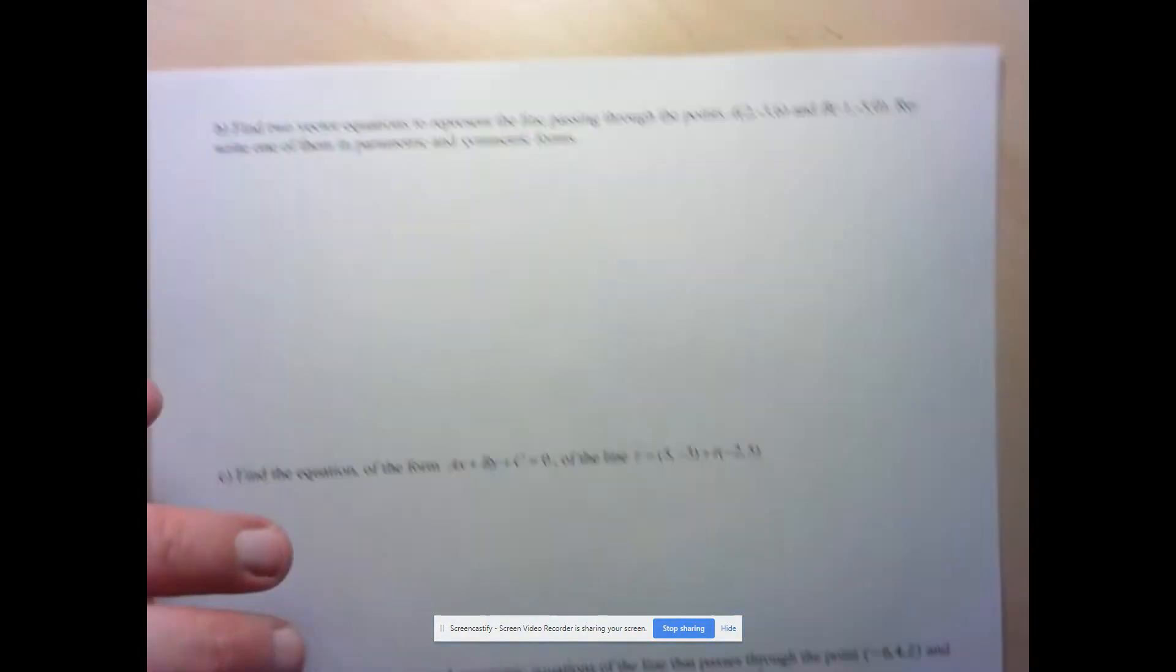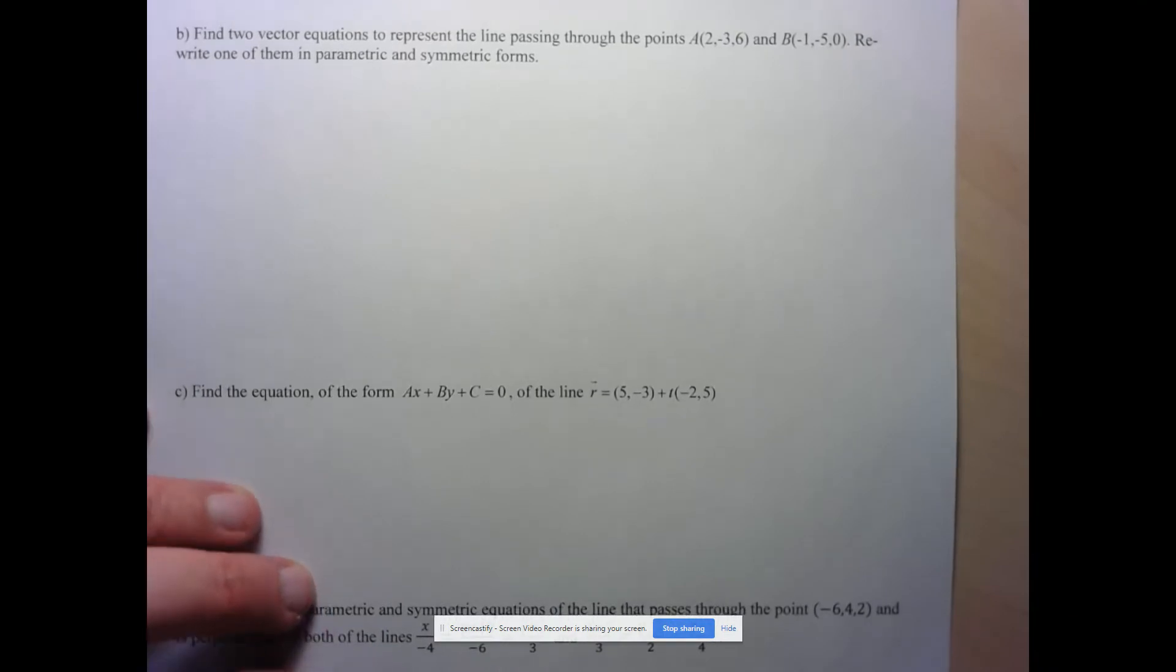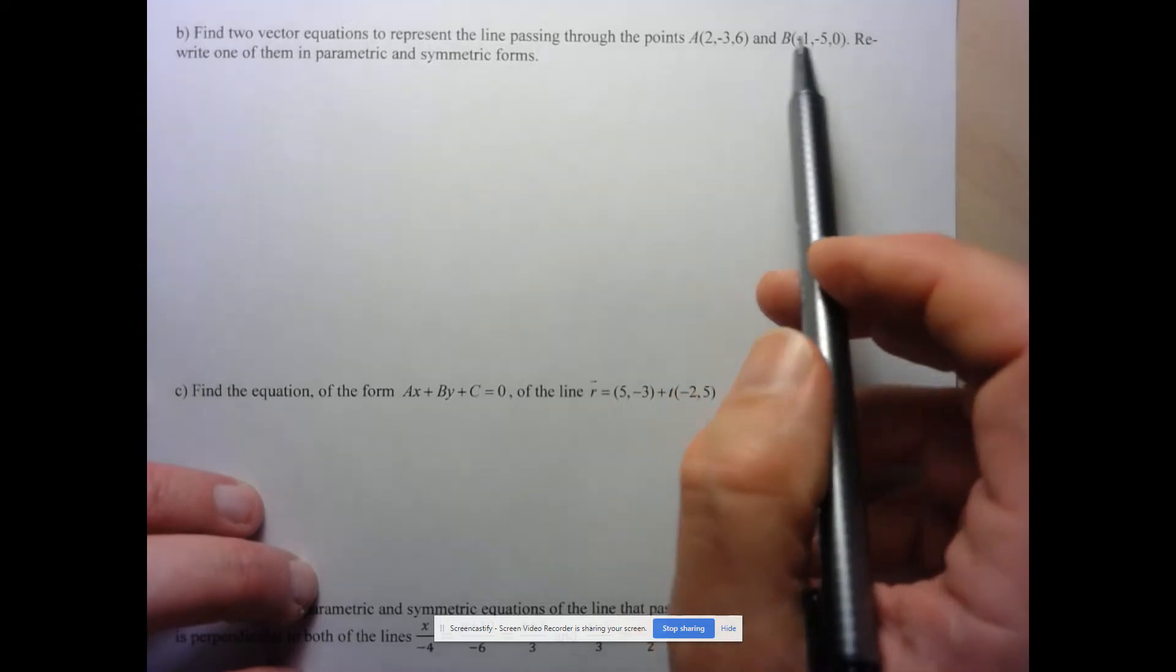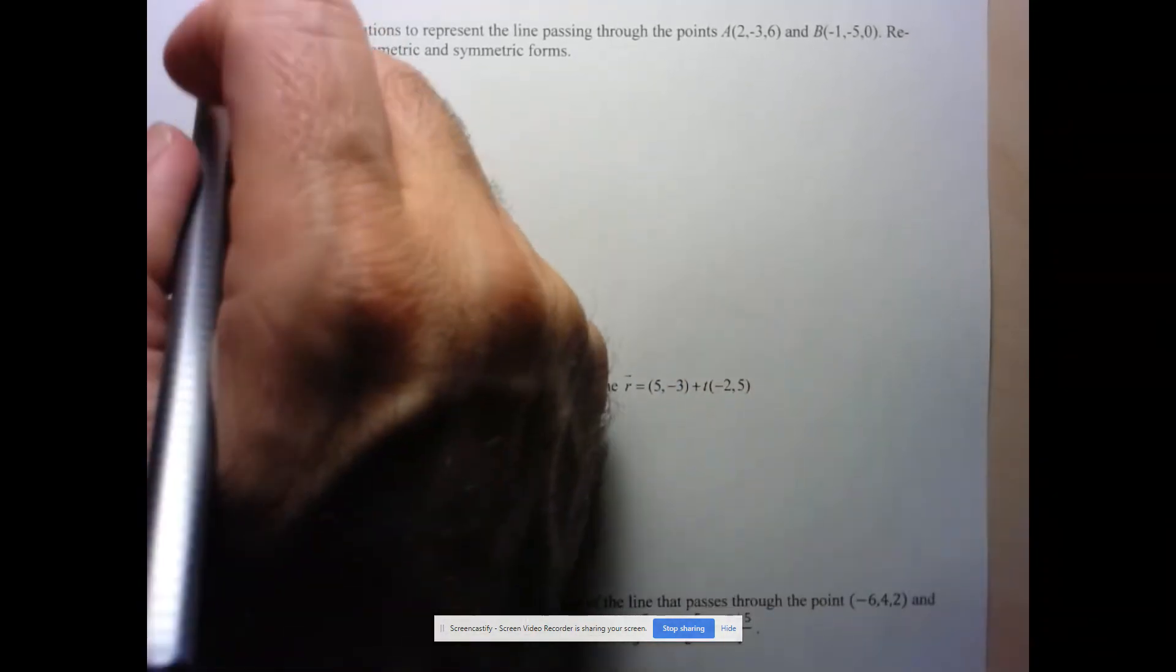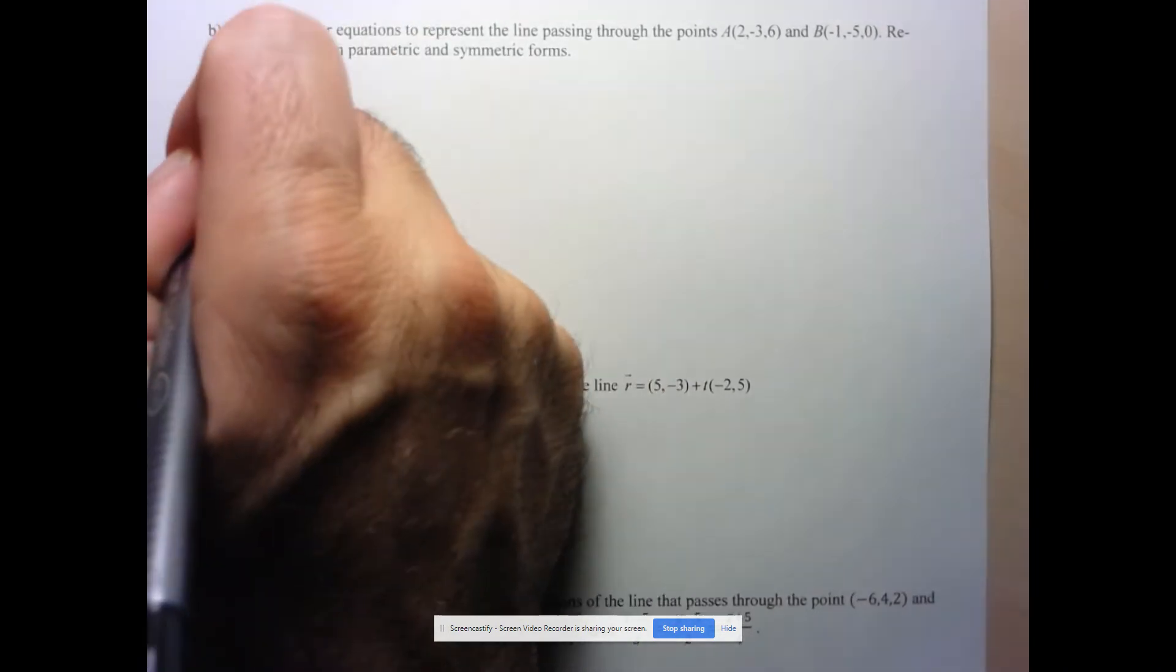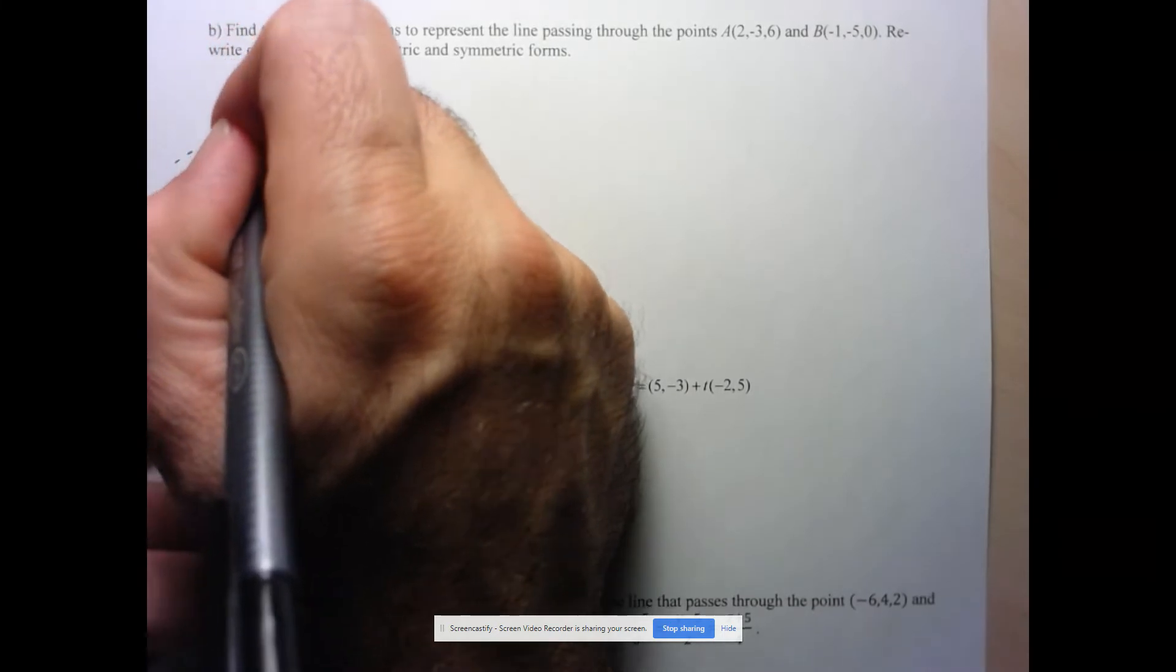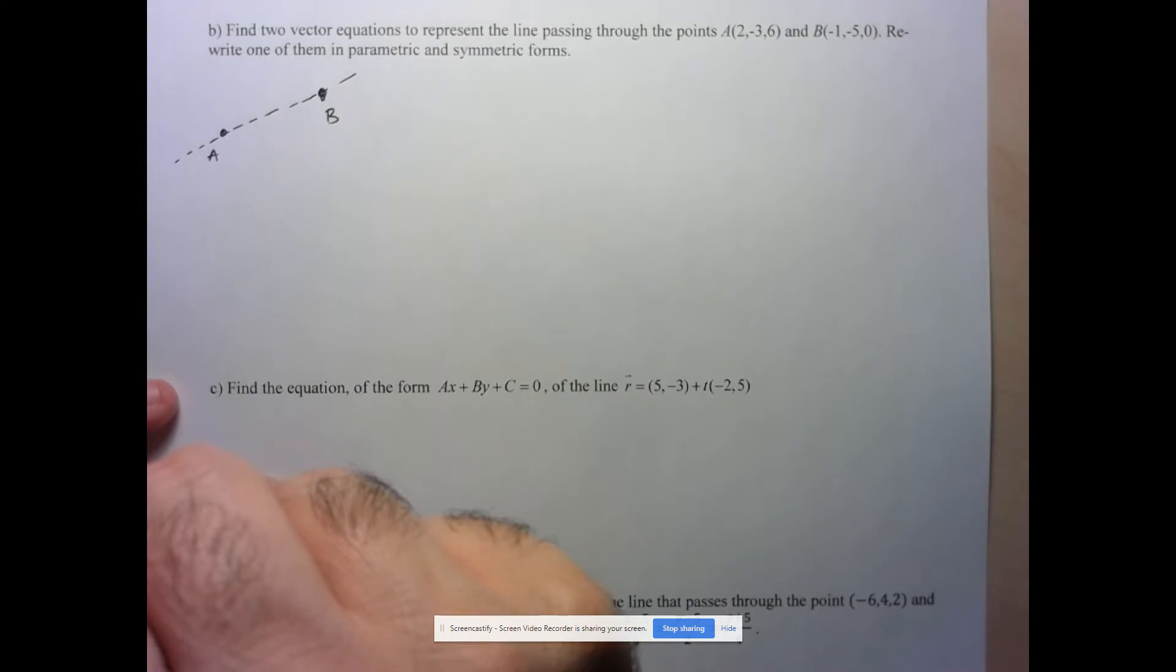So in part B, let's see what they want us to do. They want us to find two vector equations to represent the line passing through these points. So first of all, I notice that these are points in 3D. So I'm not going to bother being exact here. So let's call this A, and let's call this B, and I'm looking for the line that contains both A and B.